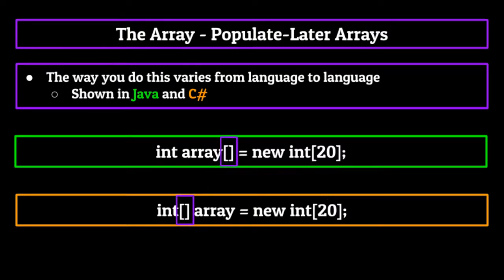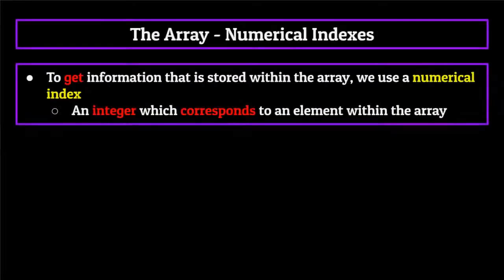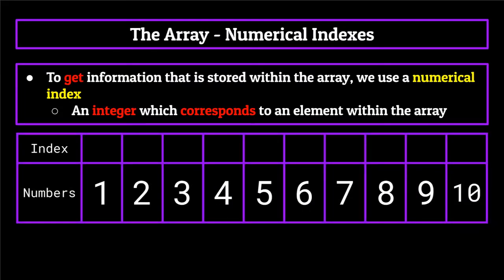You may be wondering what the brackets mean when instantiating an array — that's just a way to signify to the computer that we are creating an array and not just a variable. Now that we know the two different ways to instantiate an array, we need to know how we actually get information stored within the array, so that we're able to use it. The simplest way to answer that question is through the means of a numerical index. An index is simply an integer which corresponds to an element within the array. The most important thing to know about indexes is that they begin at zero instead of one. So if we have an array of 10 elements, the first index would actually be index zero, the second would be index one, and so on, all the way up to the ninth index.